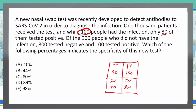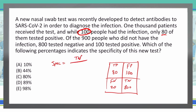Now that we've determined those values, we need our calculation. The way to calculate specificity is true negative divided by the sum of true negative plus false positive. In this case, we plug in 800 over 800 plus 100, which gives us 800 over 900, or 8 over 9.